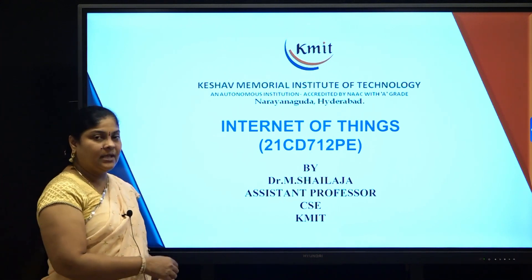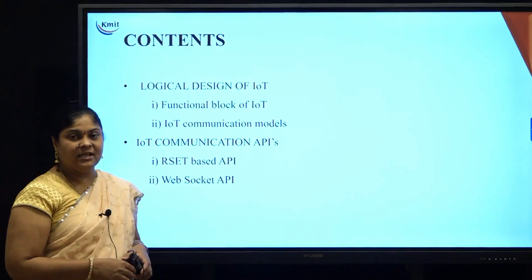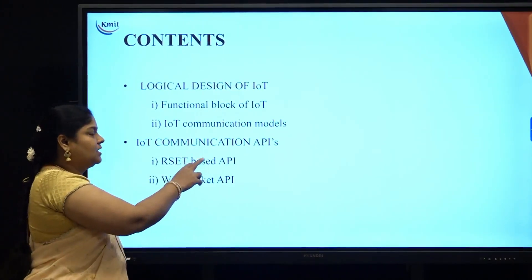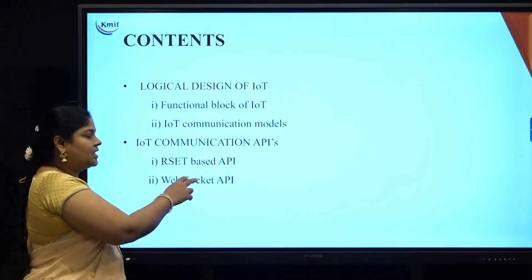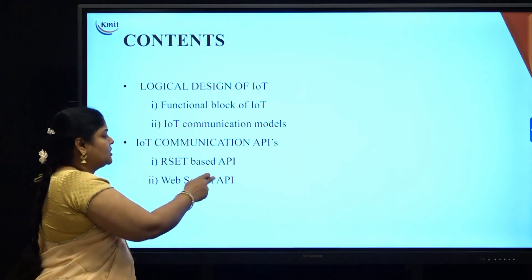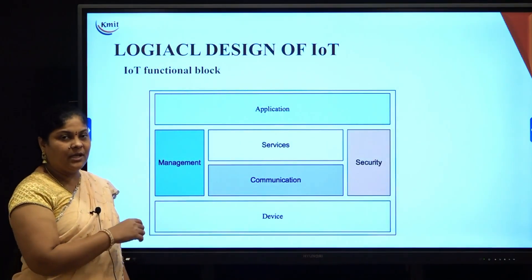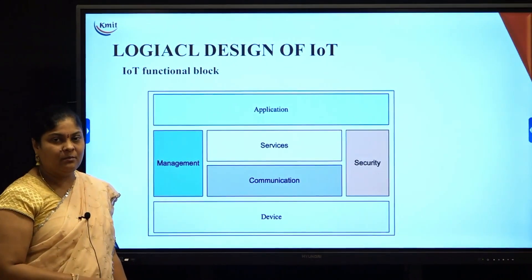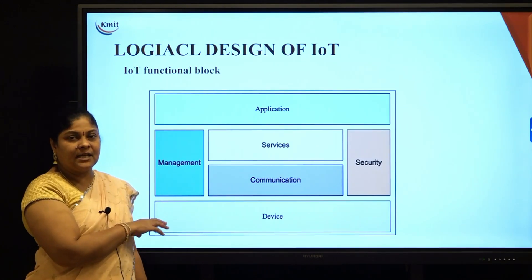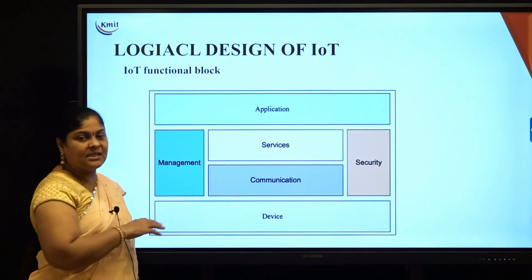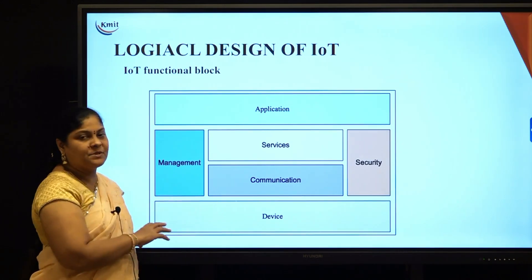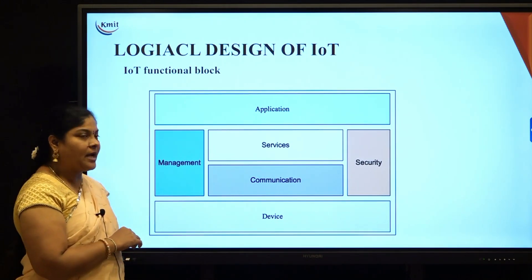The next topic in unit one is logical design of IoT. Logical design of IoT consists of two subtopics: functional blocks of IoT and IoT communication models. Then we will see IoT communication APIs, which are of two types: REST-based API and WebSocket API. Logical design basically represents an abstract representation of processes and entities where we do not have low-level specification — only an abstract description of IoT systems or IoT entities.